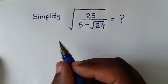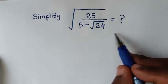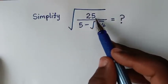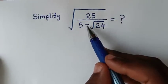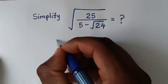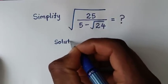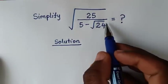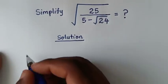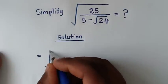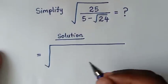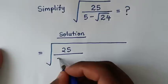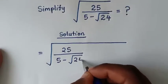Hello, you are welcome to solve this math problem by simplifying square root of 25 over 5 minus square root of 24. Now, solution. In the first step, we'll start by rationalizing this denominator here. So, it will be equal to square root of 25 over 5 minus square root of 24.